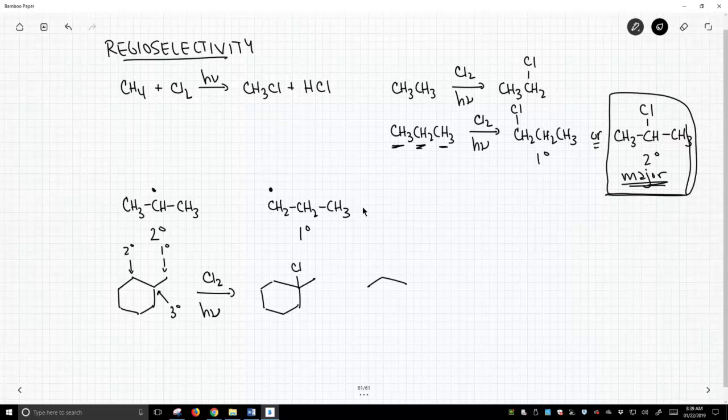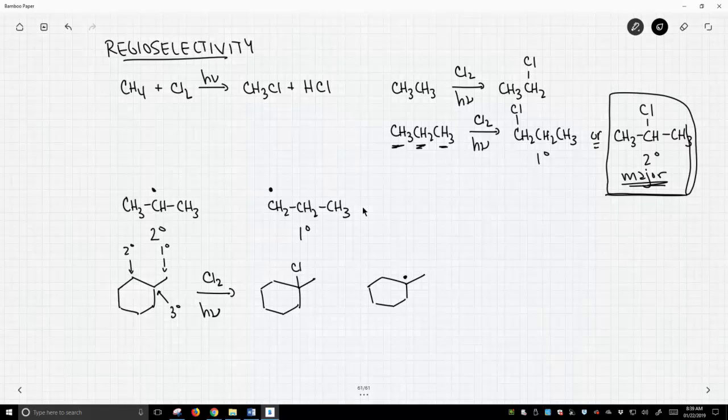And why is that? Well, we form that product because this is the most stable radical that we can form in the reaction. So these radical halogenations demonstrate regioselectivity, and the regioselectivity is consistent with the reaction preferentially making as highly substituted a radical intermediate as possible.